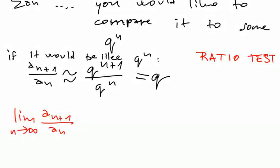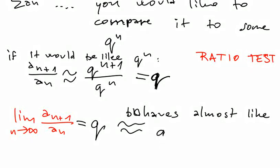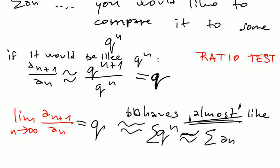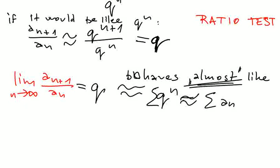So there are several possible things. Basically it will say that if this thing is equal to some Q, then it behaves almost like Q to the N. So Q to N is roughly sum of AN. I would like to emphasize here the word almost because now it is not true. If this would be true, then what we would like to say is that if this Q is at least 1, I mean in absolute value of course, then it diverges. And if Q is smaller than 1, then it converges.